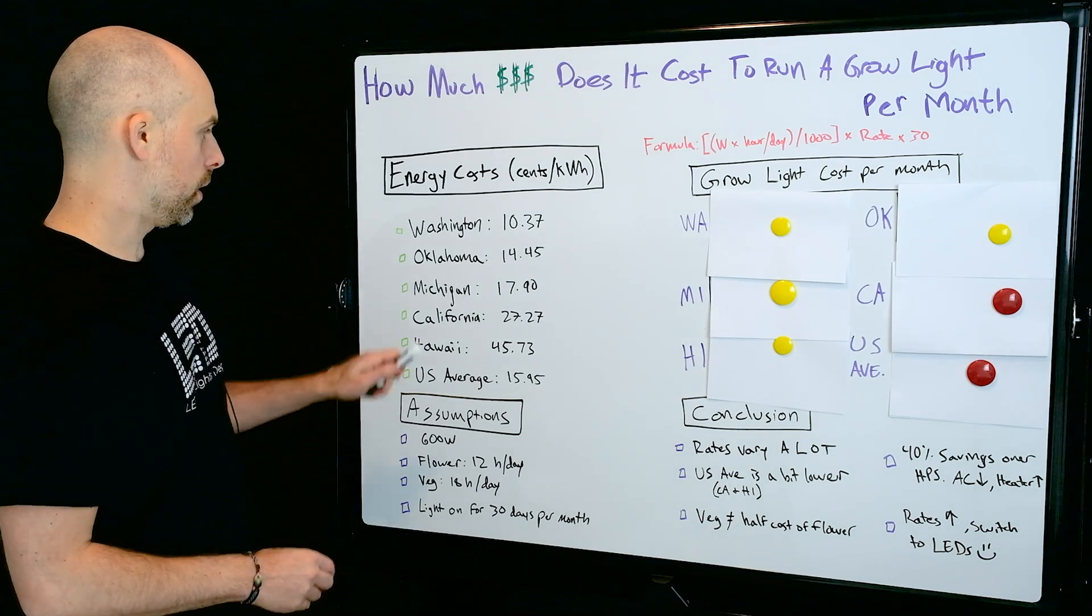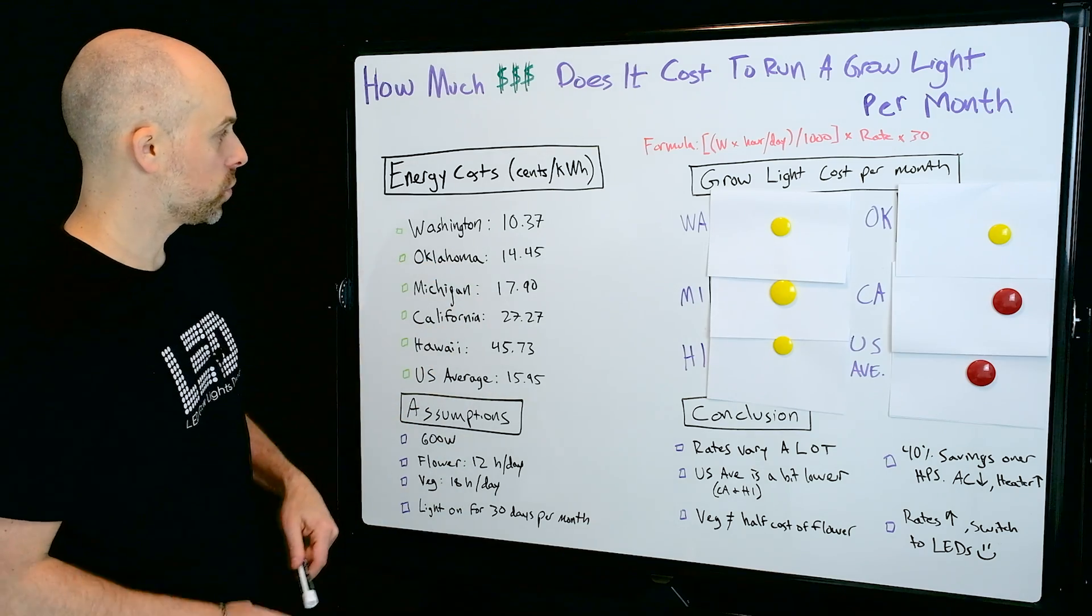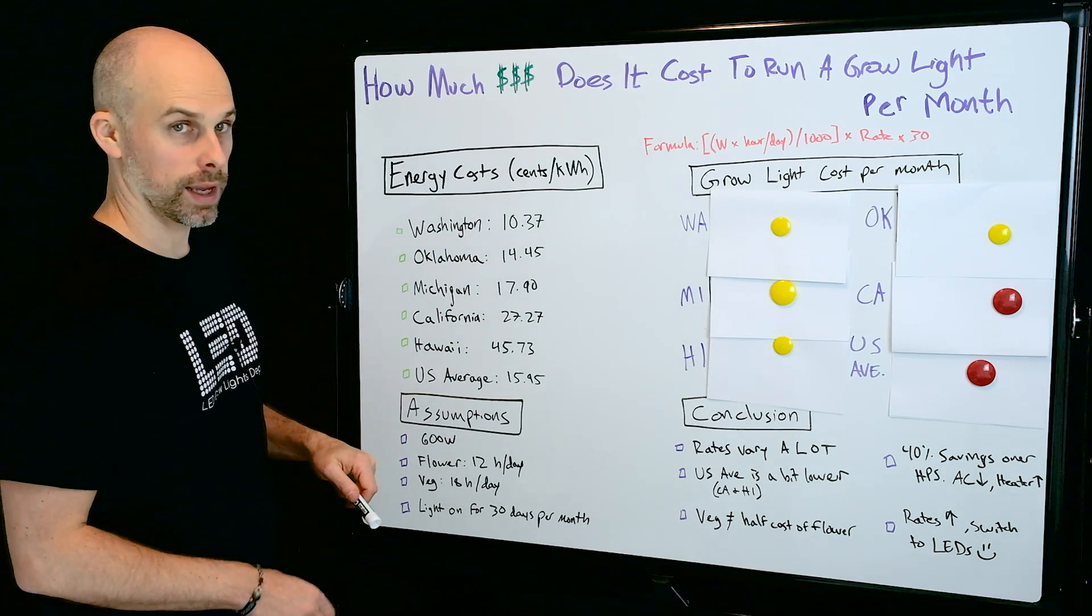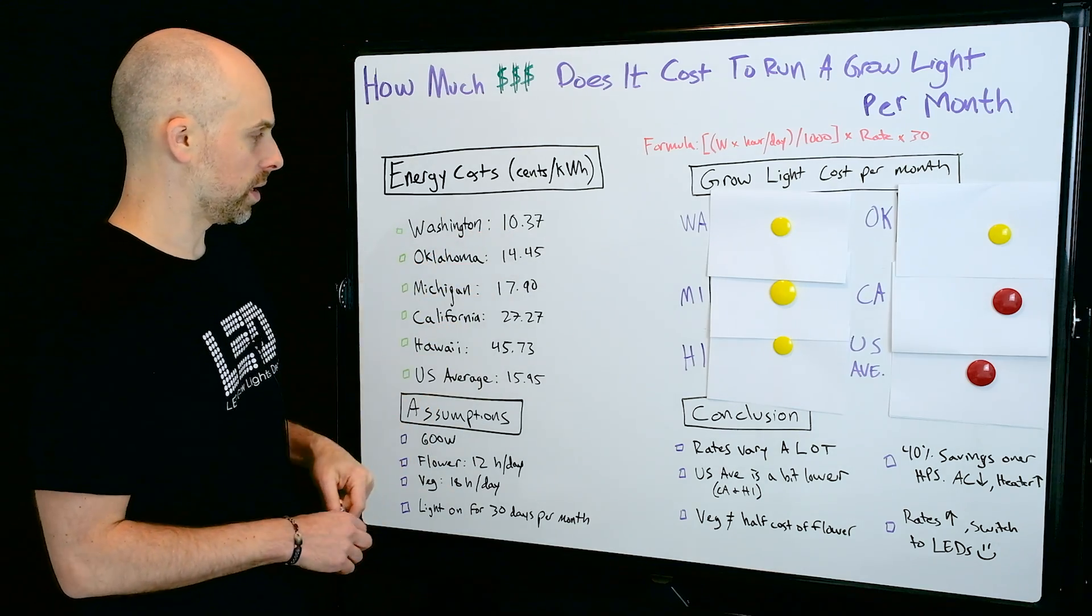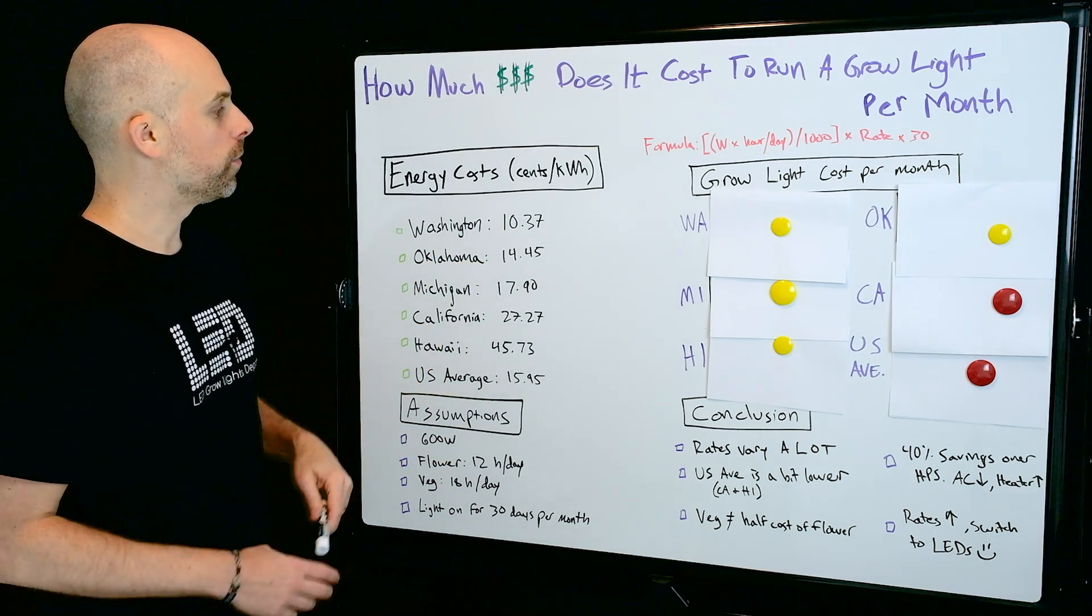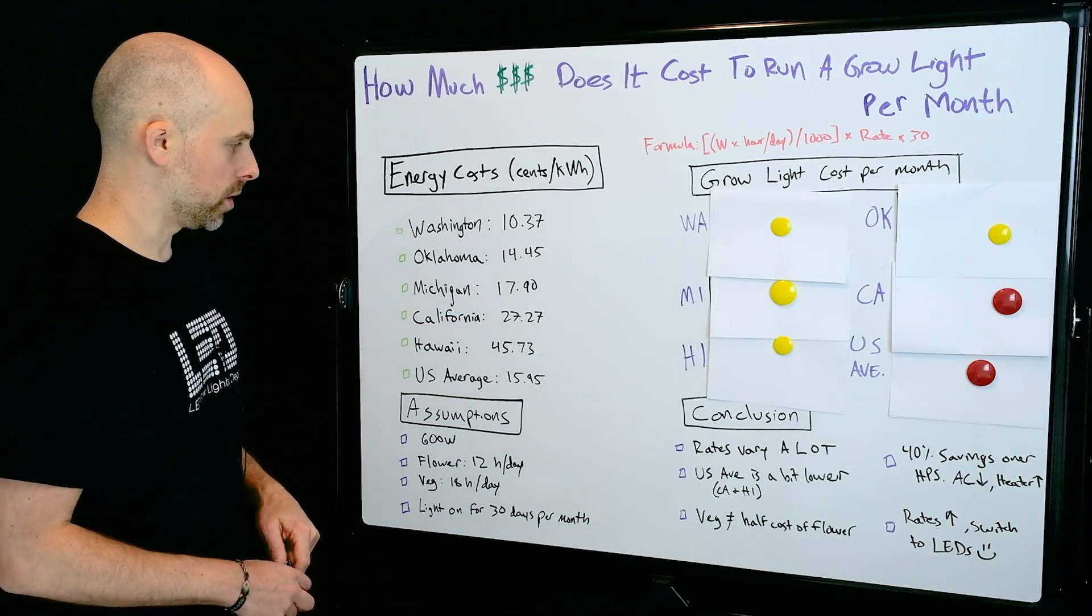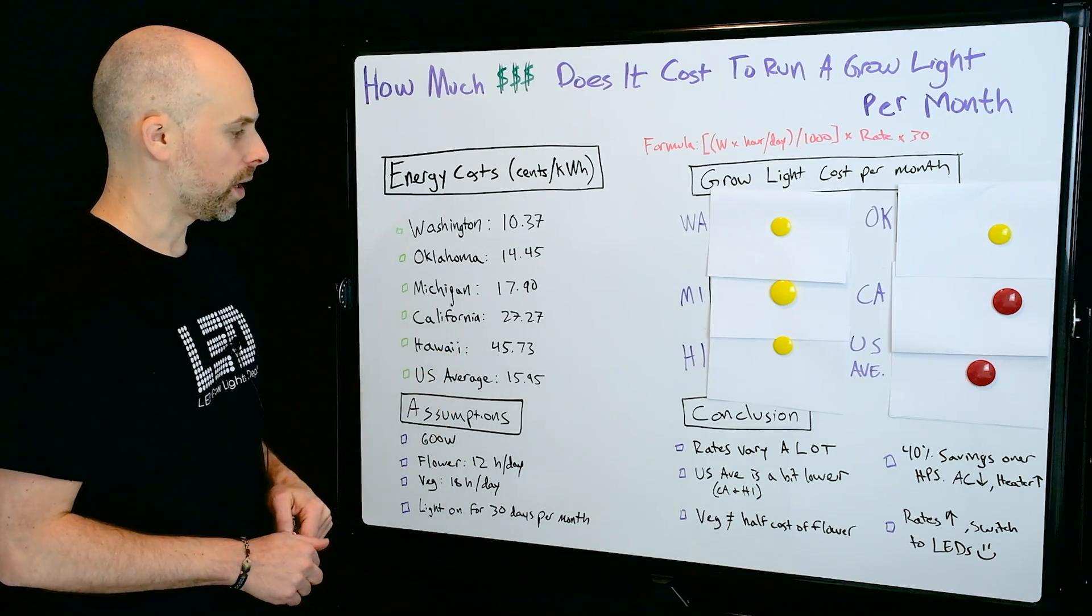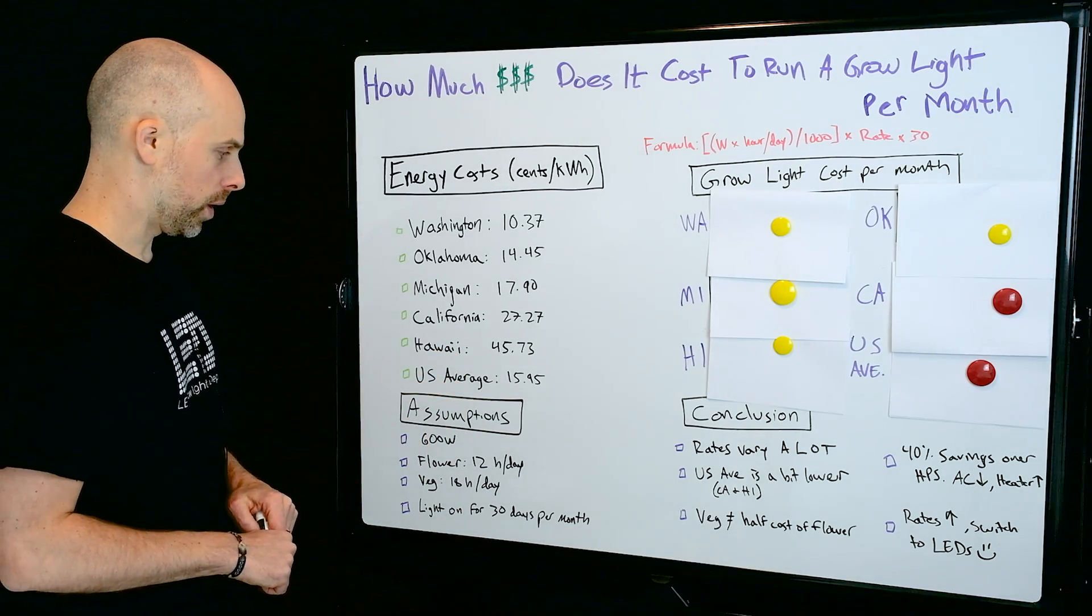You'll notice that Oklahoma is close to the average. So if you can't read those numbers very well, let me just quickly go over them. Washington is 10.37 cents per kilowatt. Oklahoma, 14.45 cents. Michigan, 17.90 cents. California, 27.27 cents. Hawaii, 45.73 cents. And the U.S. average, 15.95.